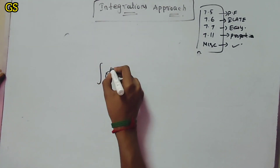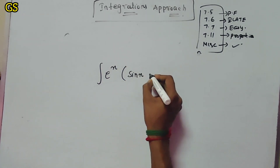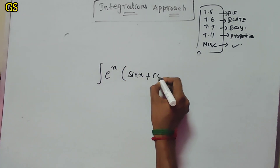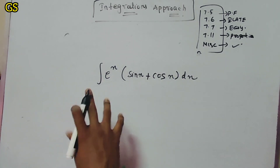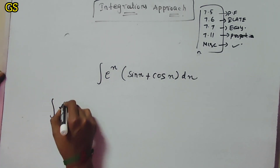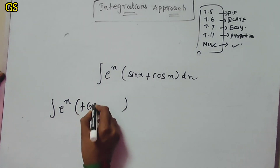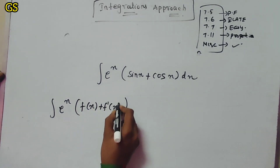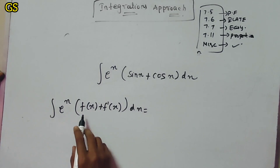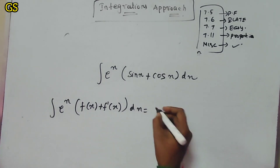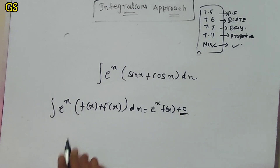Integration of e^x times (sin x plus cos x). This is a function of x — this is the integration type where e^x multiplies a big function of x. You can use this type: integration of e^x [f(x) plus f'(x)] equals e^x times f(x) plus C.